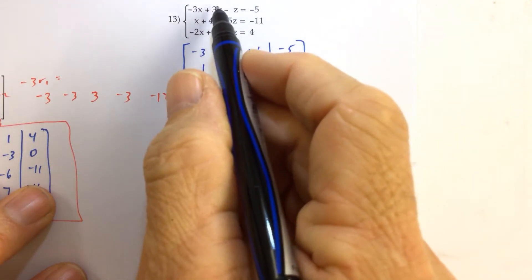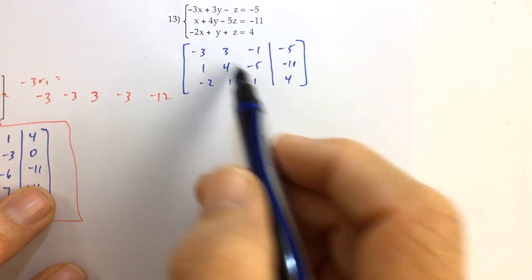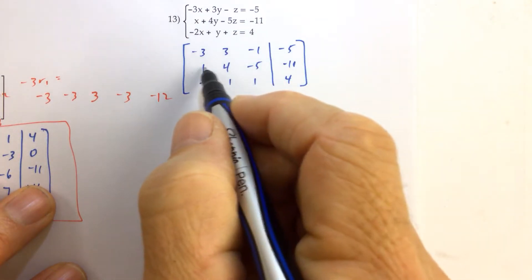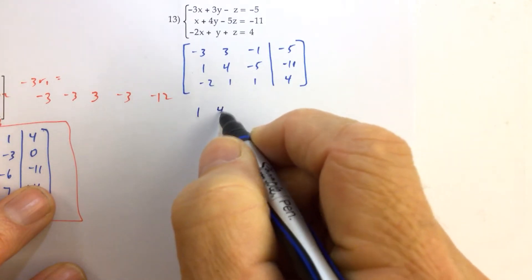Rewriting the system of linear equations as a matrix, an augmented matrix. I'm noticing here that my key row is my second row here. So I'm going to rewrite that as my first row.